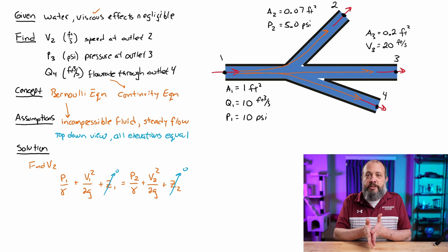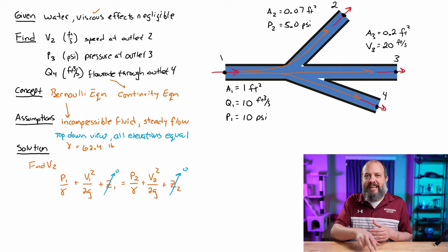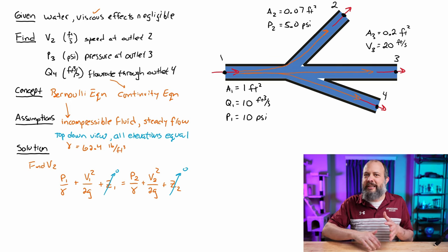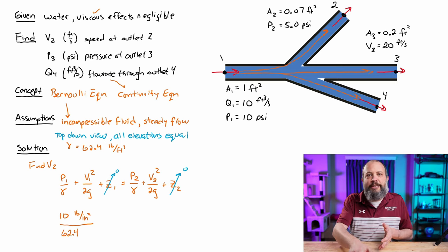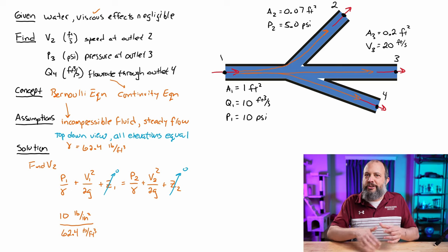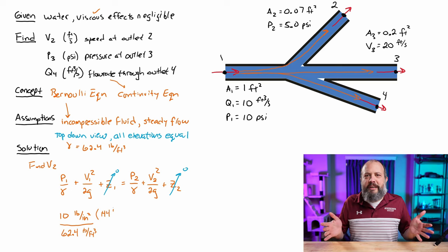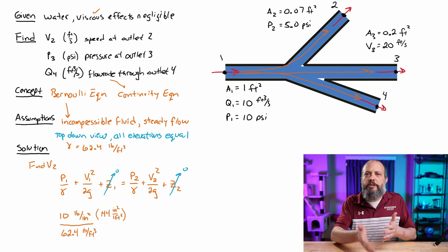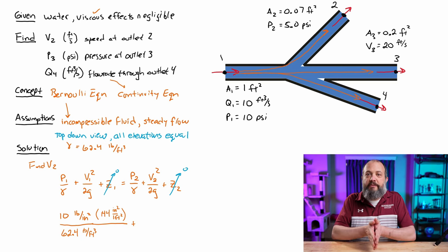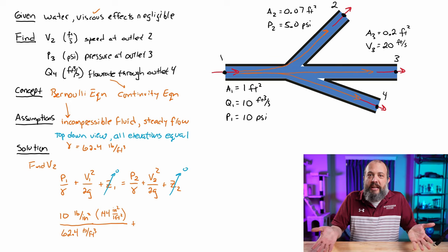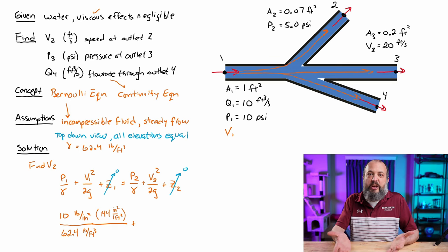With that, I can start to plug in some terms. I've got 10 psi for pressure. I'm going to have to do a unit conversion because psi pounds per square inch, that's not going to match the velocities or areas given in feet. So I multiply by 144 inches squared per feet squared. We weren't given velocity 0.1, so that's something we'll actually have to solve for using the given flow rate and area.